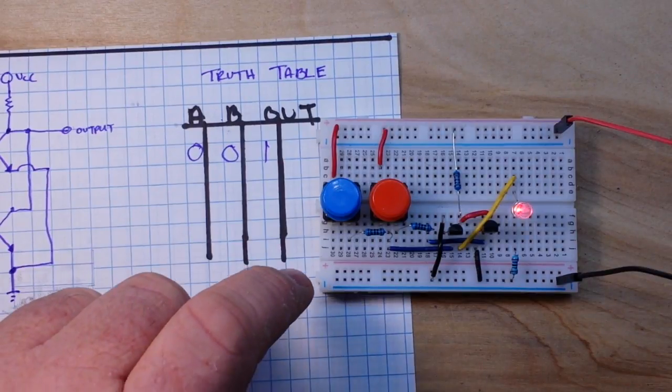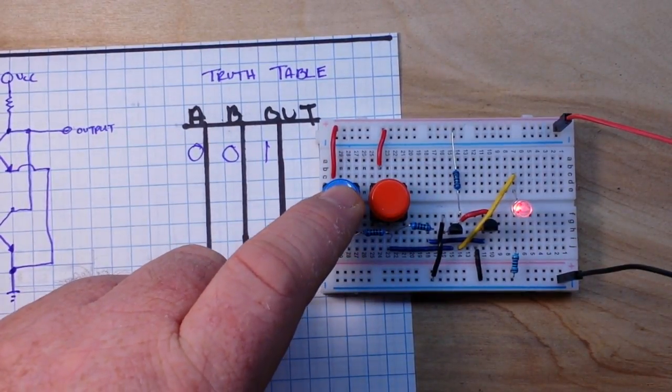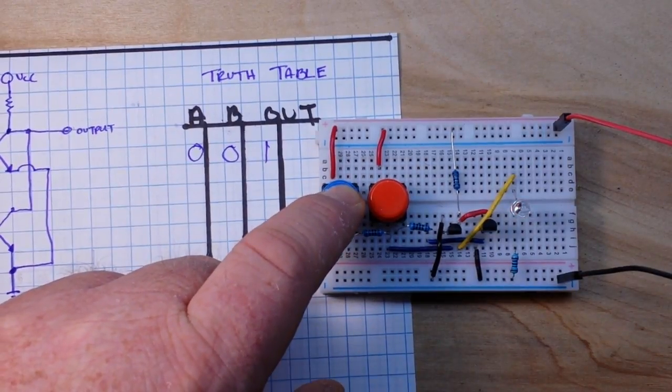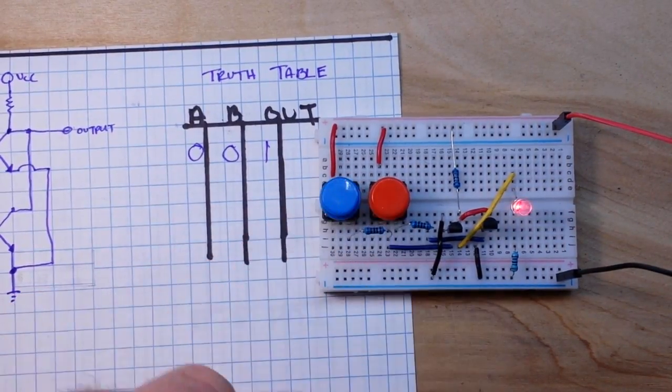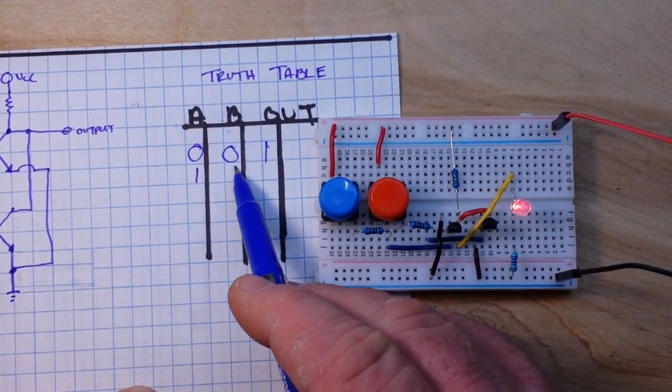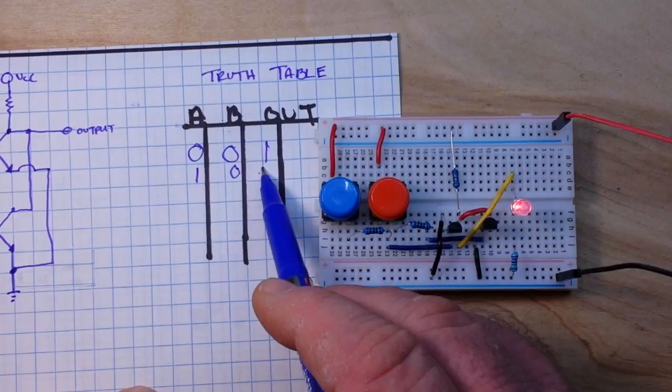Next we will give A true and B false. So 1, 0, 0.